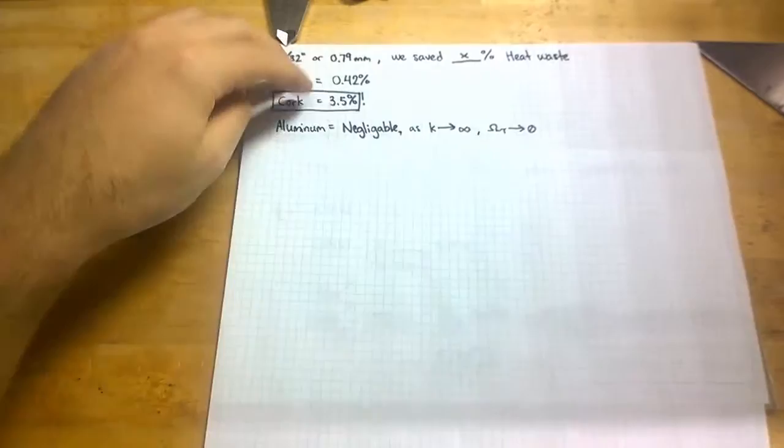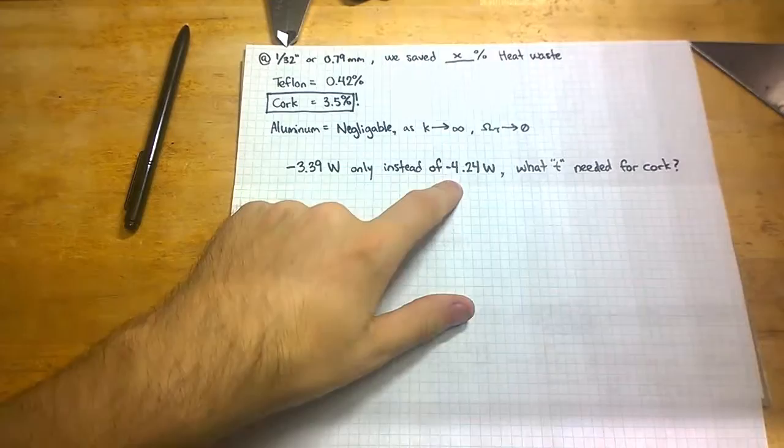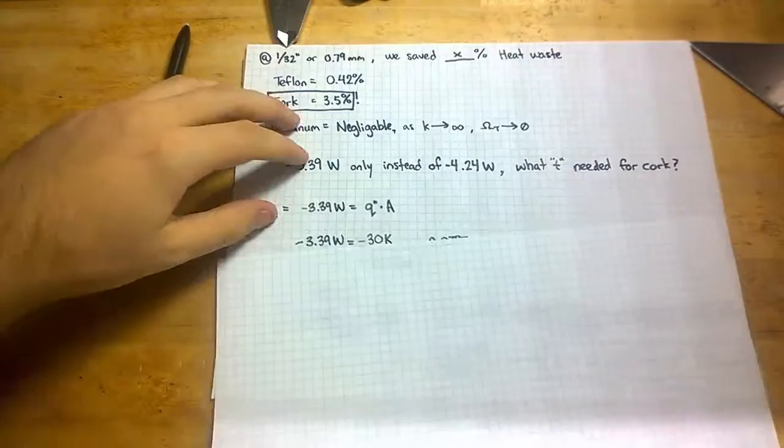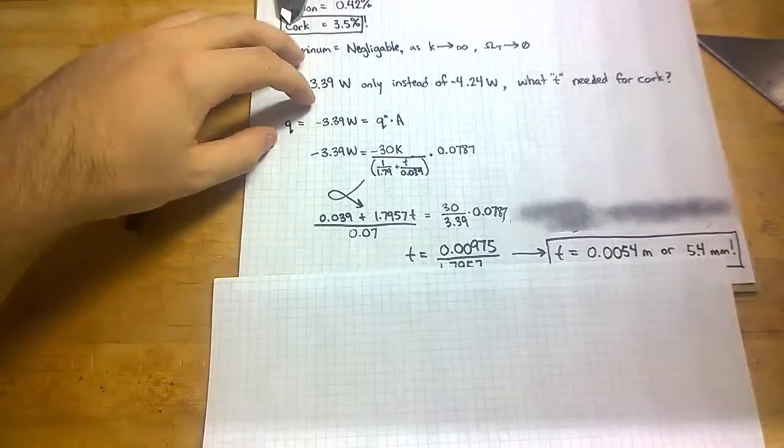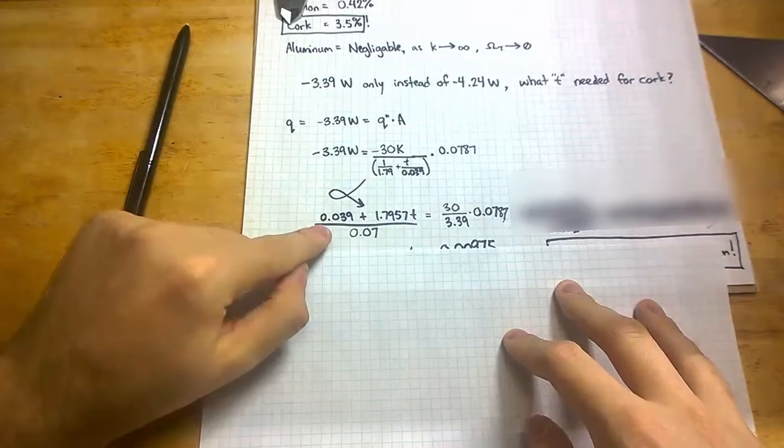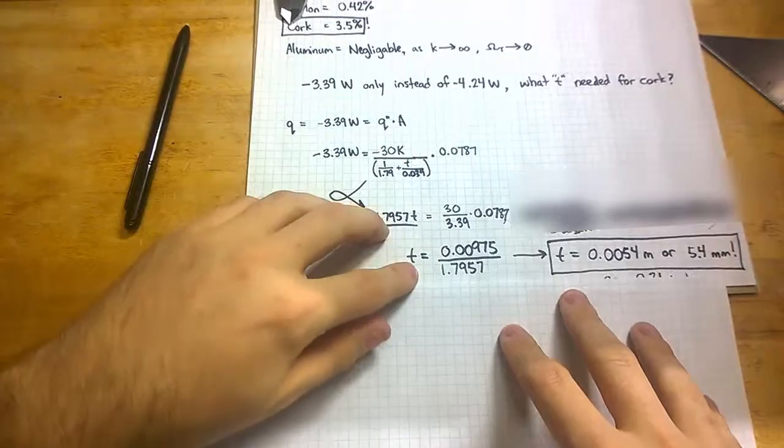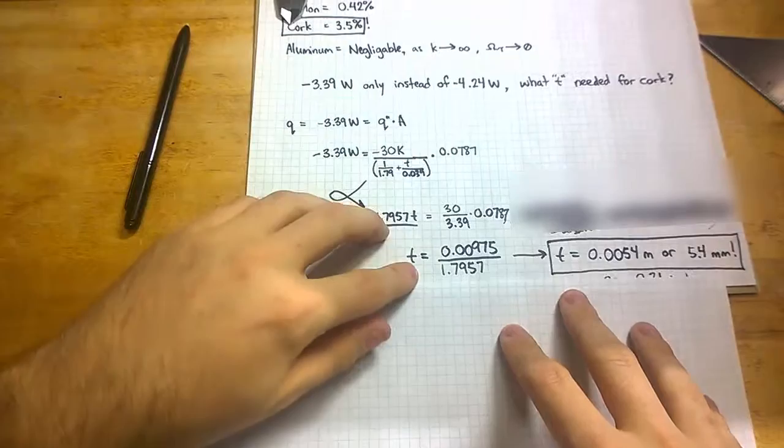What if we wanted only this much power lost in heat instead of this? What thickness would we need, let's say for cork, because cork was the most efficient? Well, we can do all the math out by breaking it down, and we end up finding that, well, the negatives cancel, by the way, which is nice. Rearranging through using just basic algebra, we find that T is equal to 0.0054 meters or 5.4 millimeters.